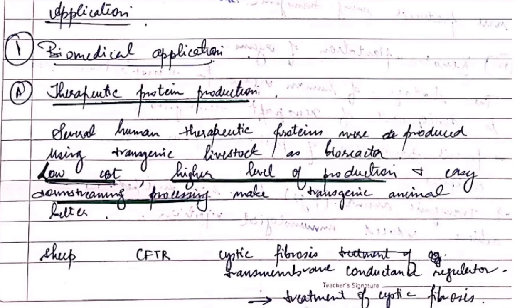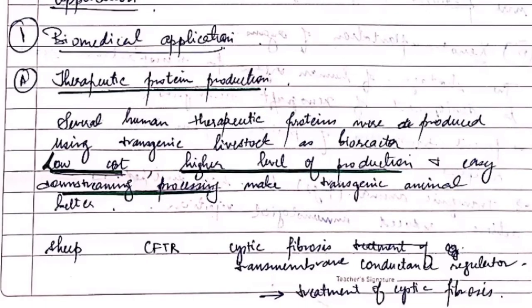Now we will study the application part, which is very important. The biomedical application is the production of therapeutic proteins. Many human therapeutic proteins are produced using transgenic animals as bioreactors because they have low cost, higher levels of production, and can be easily downstreamed in process.